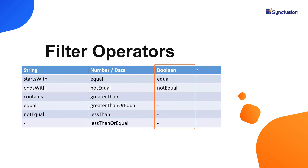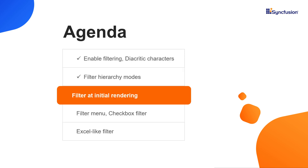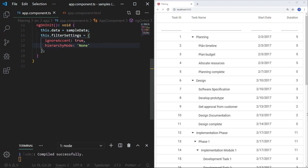If the column includes boolean values, the only allowed operators are equal and notEqual. Although the filter bar UI is preferred to filter records dynamically, you can also set static filter conditions through code and make the Angular TreeGrid display only filtered records at its initial load. To make this happen, I need to set filtering options on the required columns. For example, I would like to filter and display records where the task name starts with 'plan' and the duration column value equals 5.